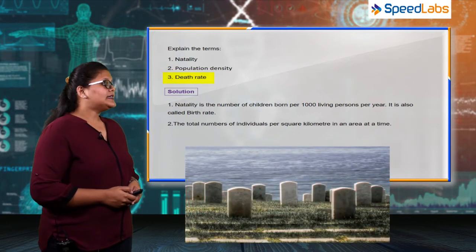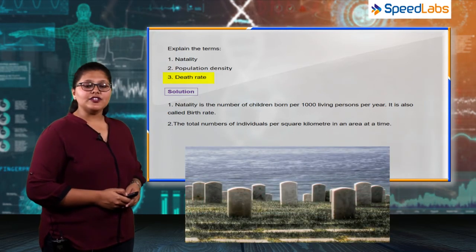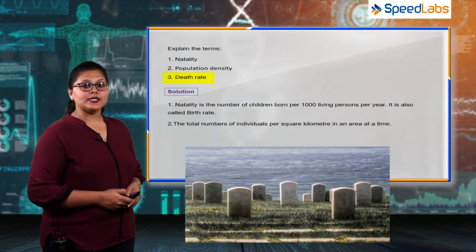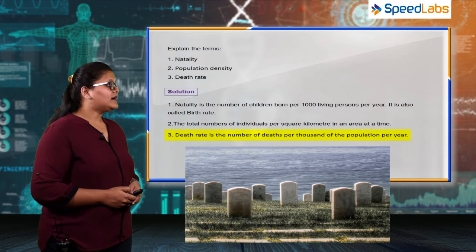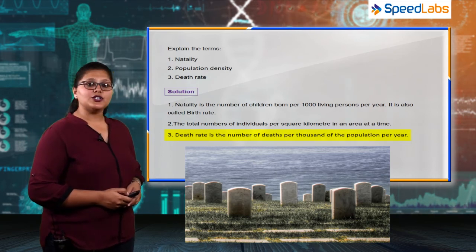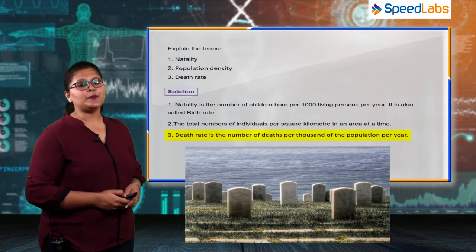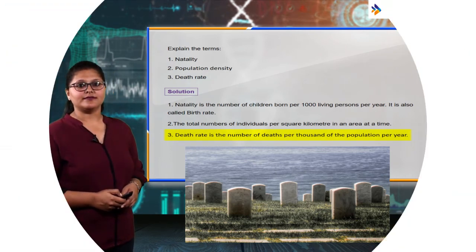The third term is death rate, which is also called the mortality rate. It is the number of deaths per thousand of population per year.